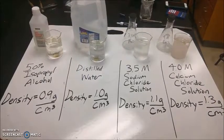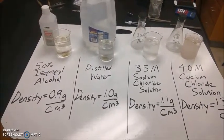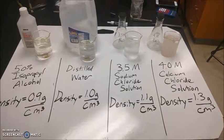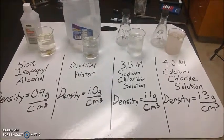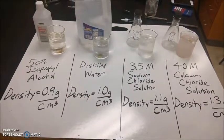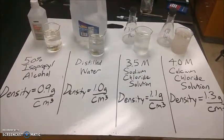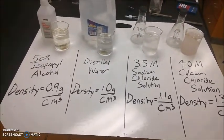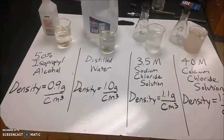Mixtures you'll be working with are 50% isopropyl alcohol, distilled water, 3.5 molar sodium chloride solution, and a 4.0 molar calcium chloride solution. Each one has a slightly different density greater than the previous one, which allows you to separate the plastics based on these different densities.